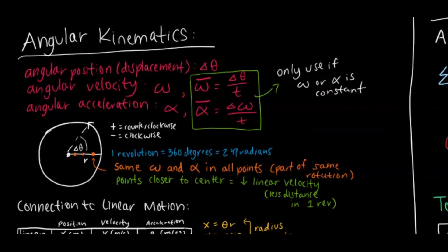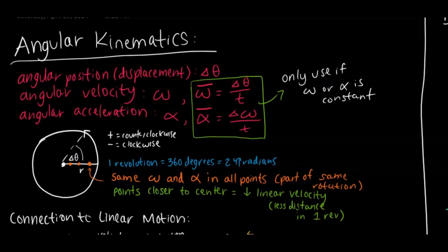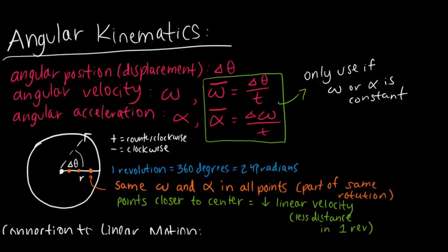The first topic is angular kinematics. This unit is kind of a summary of everything you've learned so far this year. The first unit is kinematics and now we have angular kinematics — it's sort of a spin-off of that. Key terms: angular position, where displacement is just change in the angle; angular velocity, represented by the omega symbol; and angular acceleration, represented by the alpha symbol.